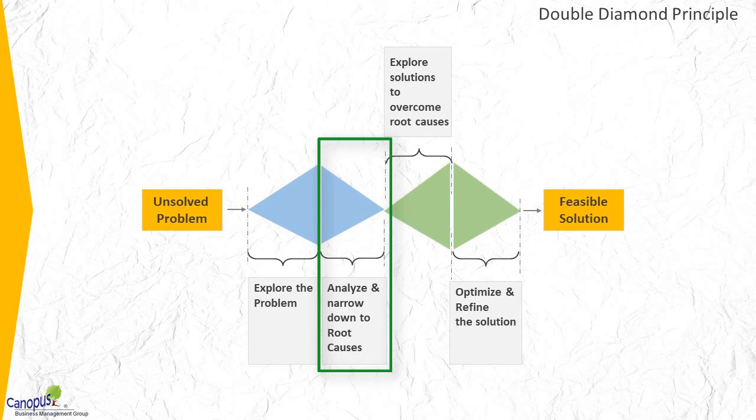We have covered the first divergence and the first convergence, so the first diamond is completed. By the end of the first diamond, you have some idea about what the causes are. If it is a product development context, we need to know what the customer problems are and what is hindering the customers from using the product more.